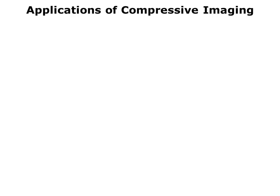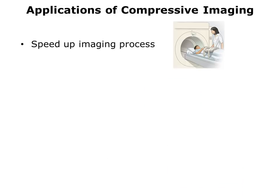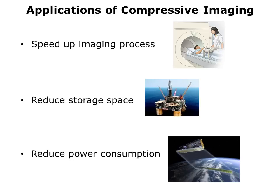A quick overview of some applications of compressive imaging. These applications could be, for example, in medical imaging, seismic imaging, and remote sensing. In the medical imaging application, we may want to speed up the imaging process so the patient gets less radiation. In seismic applications, there's often a storage problem — there's a ton of data and we want to reduce the amount of data. And finally, in remote imaging, often there's a satellite involved, and by transmitting less information to the ground, we'll be reducing the power consumption.